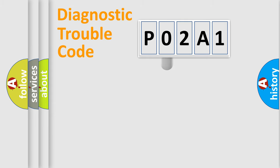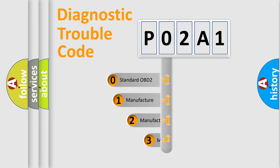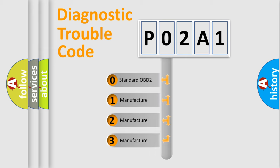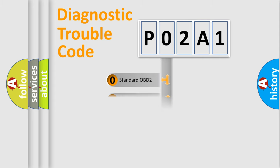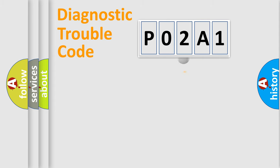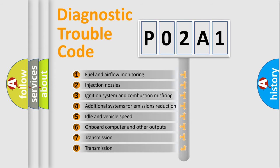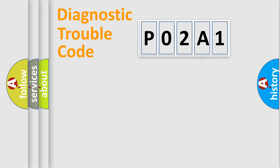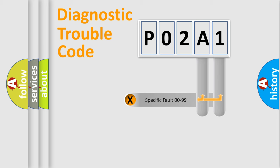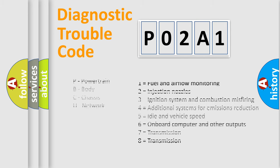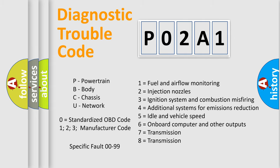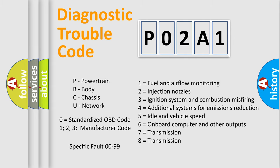This distribution is defined in the first character of the code. If the second character is expressed as zero, it is a standardized error. In the case of numbers 1, 2, or 3, it is a more manufacturer-specific expression of the car error. The third character specifies a subset of errors. Only the last two characters define the specific fault of the group. This division is valid only if the second character code is expressed by the number zero.